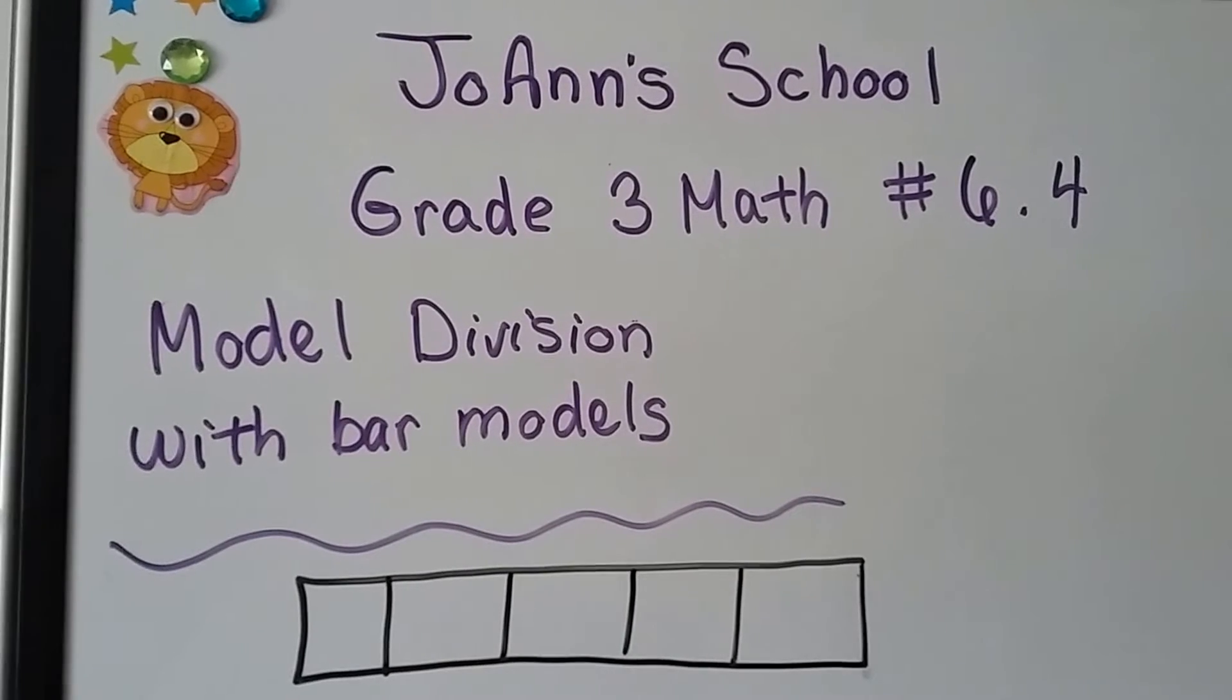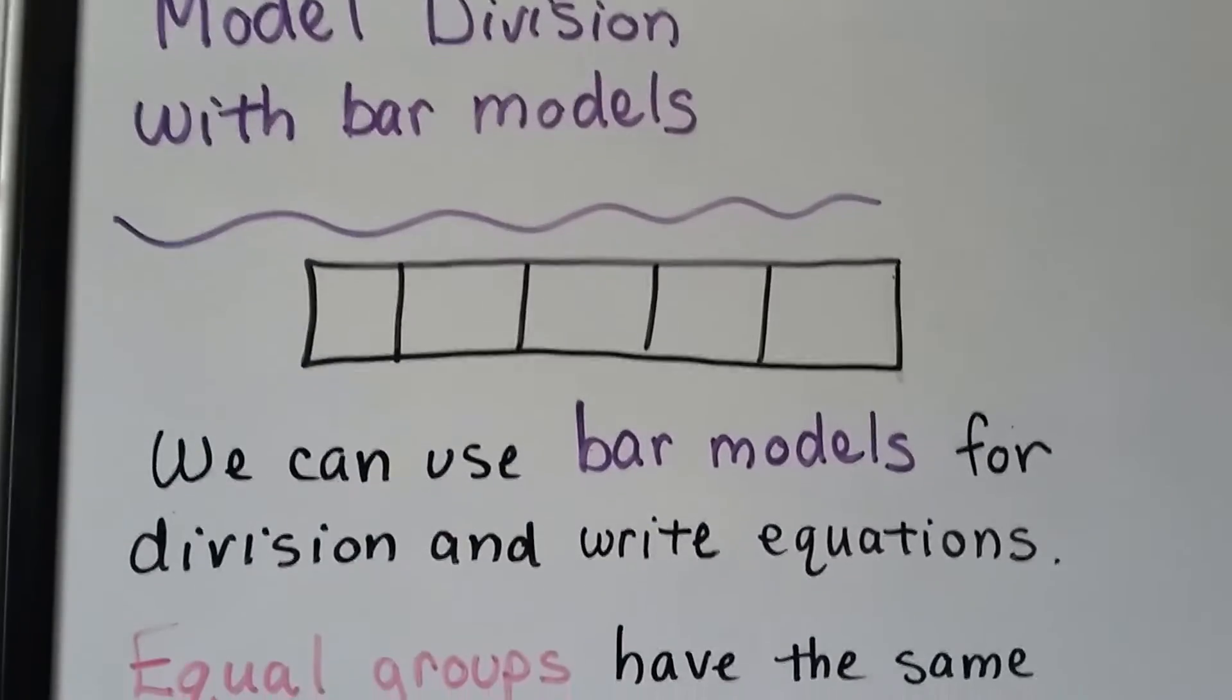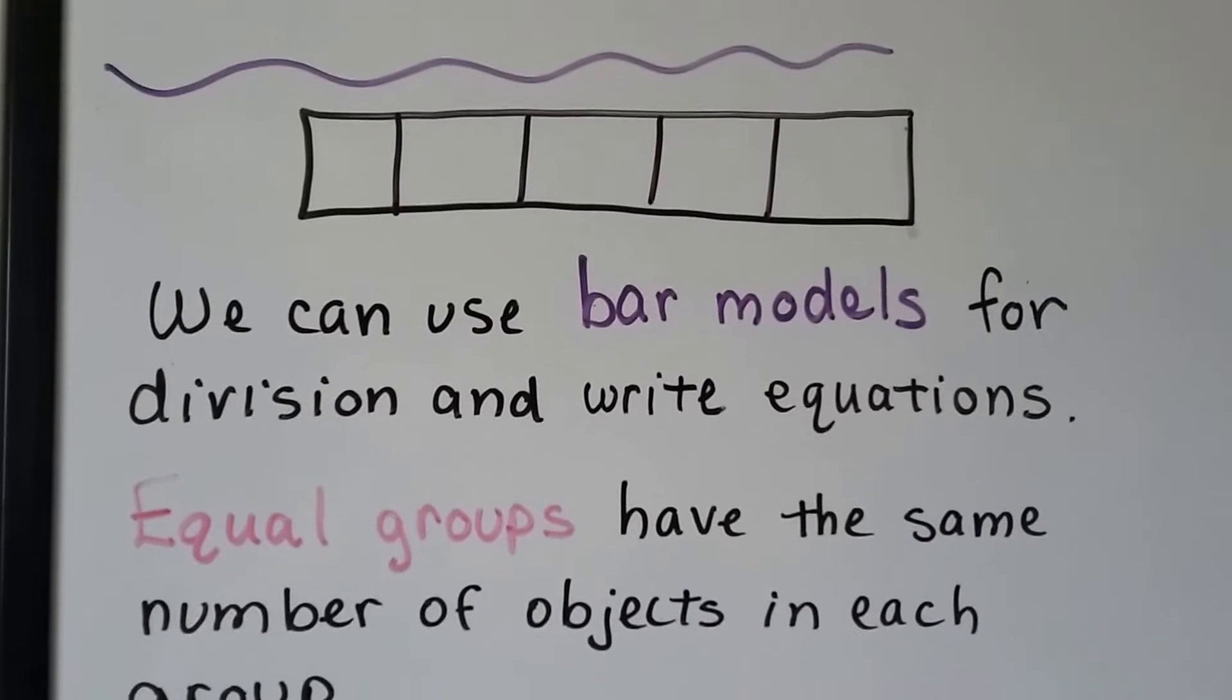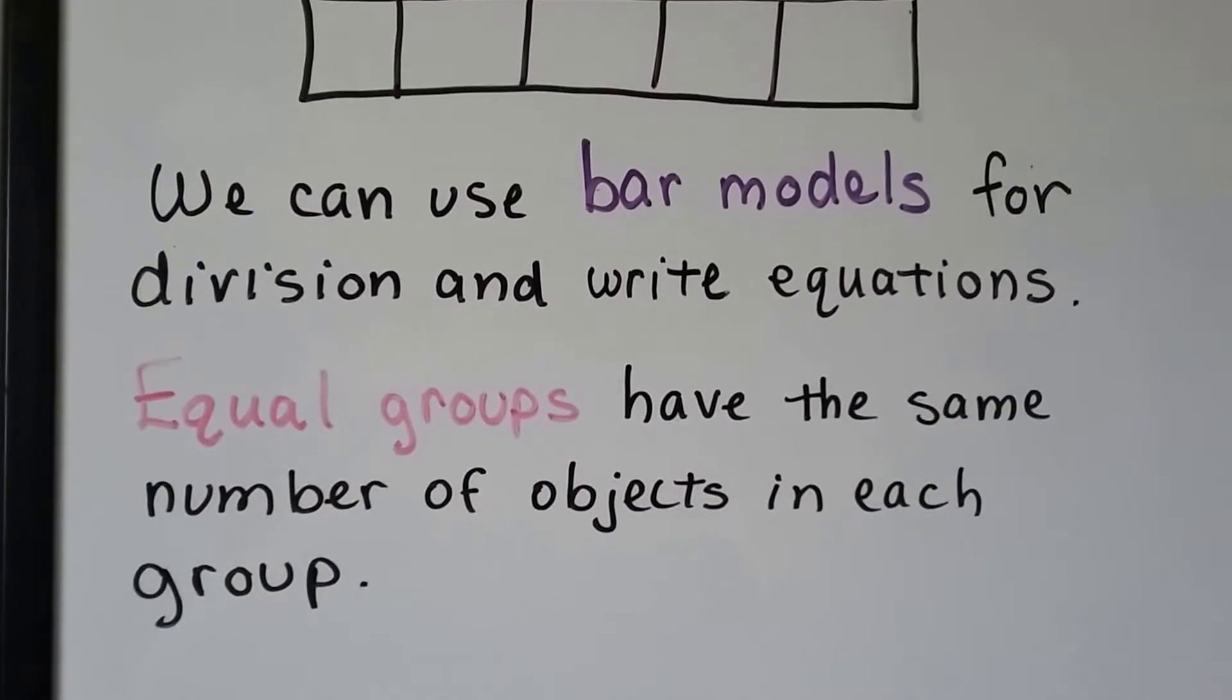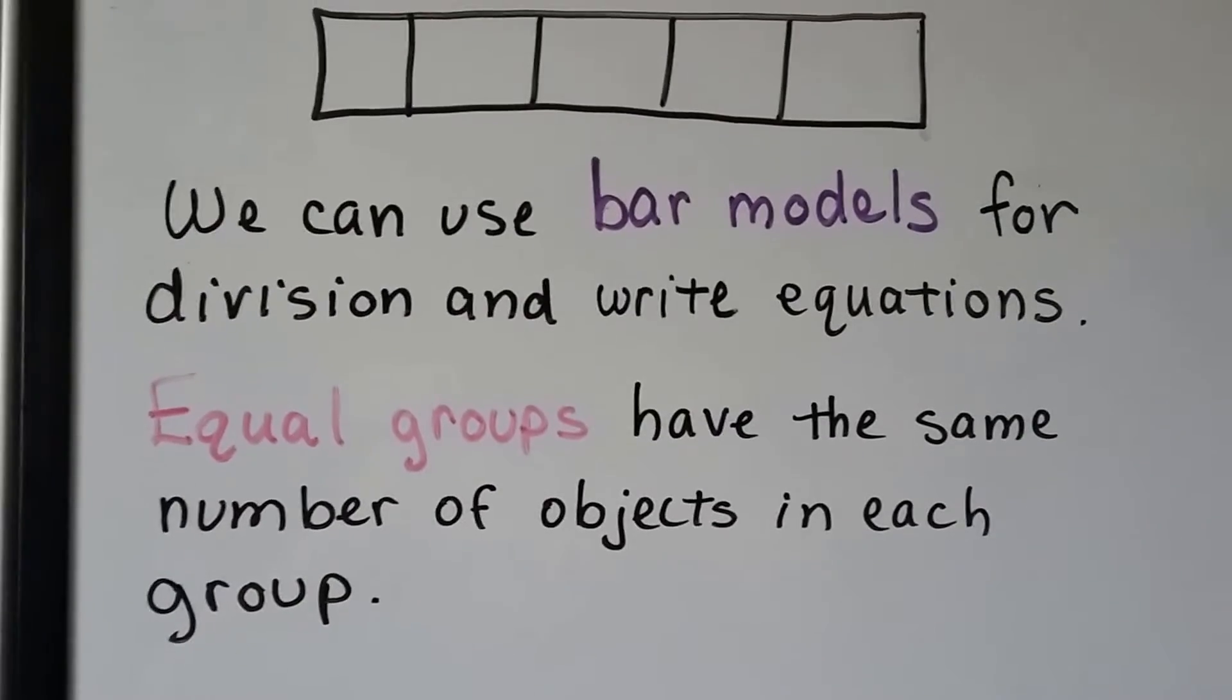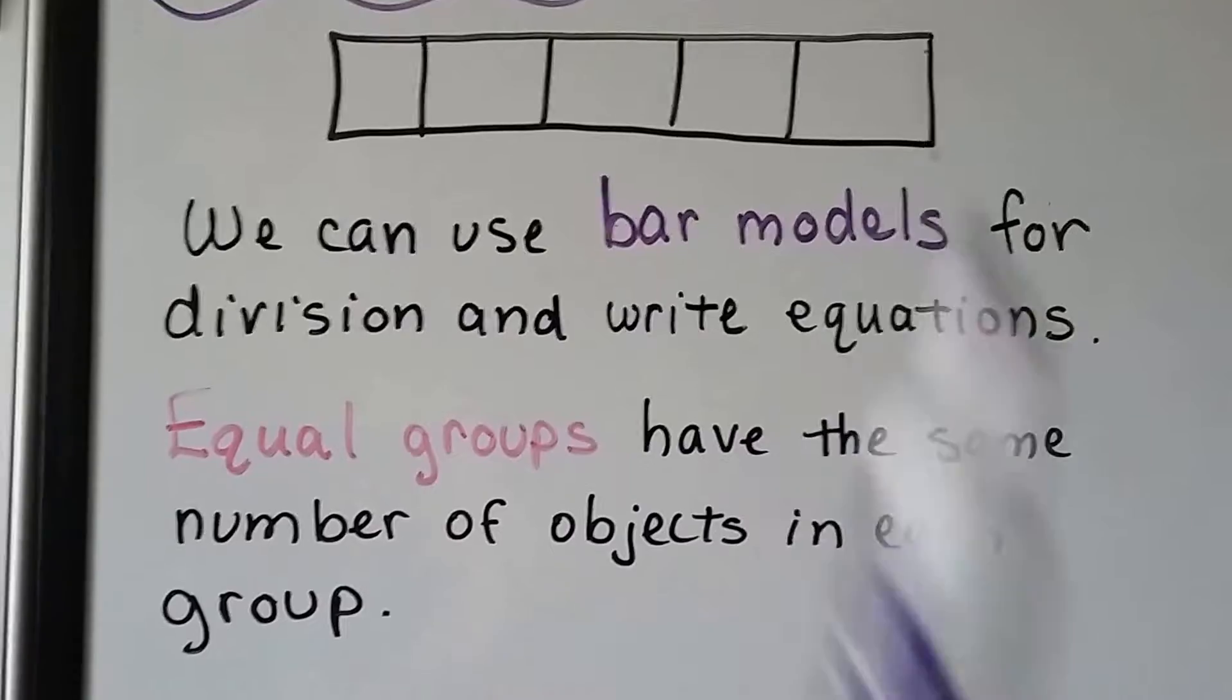Grade 3 math number 6.4: model division with bar models. That's a rectangle with boxes, that's a bar model. We can use bar models for division and write equations. Equal groups have the same number of objects in each group, so our bar models are going to have the same number in each box.